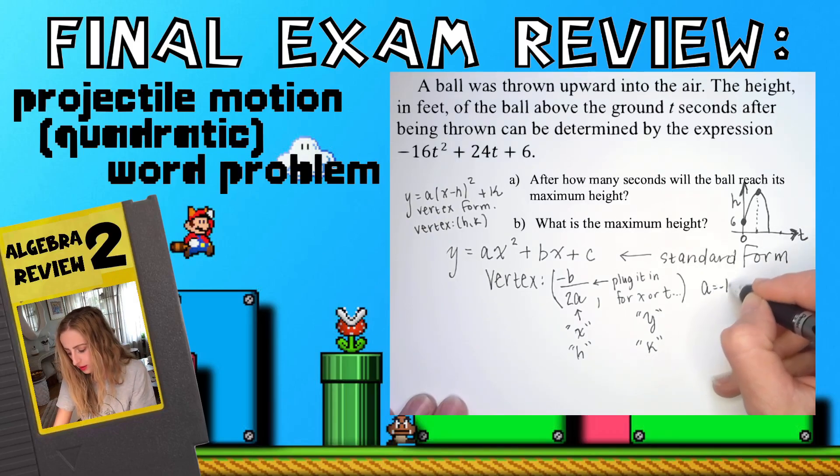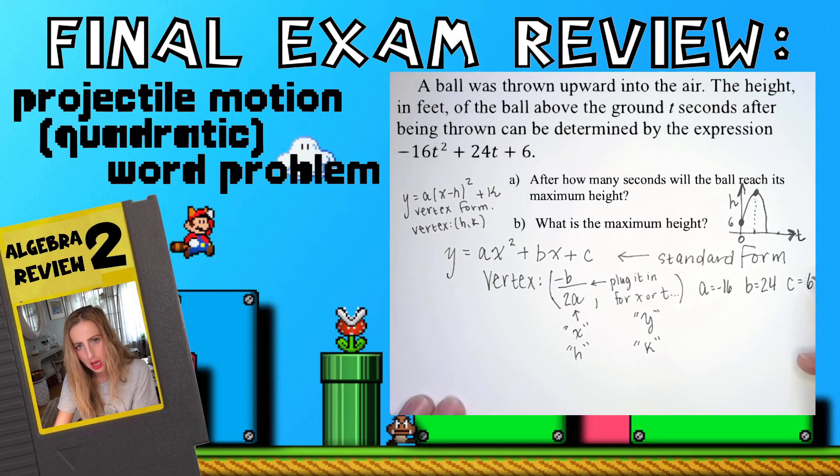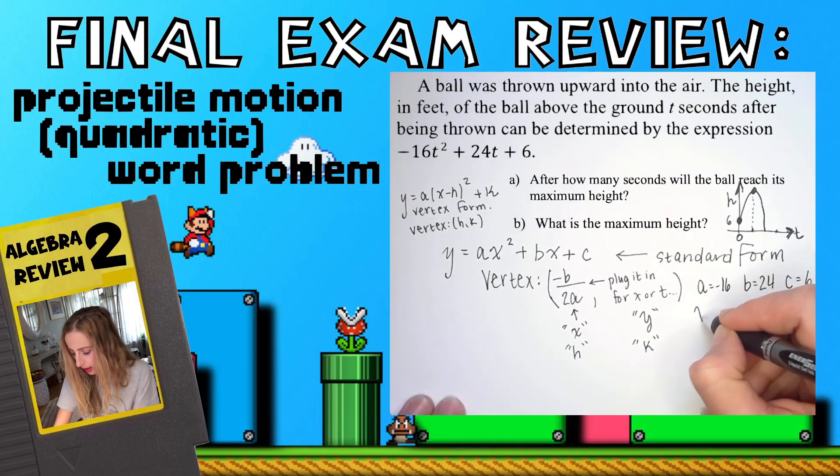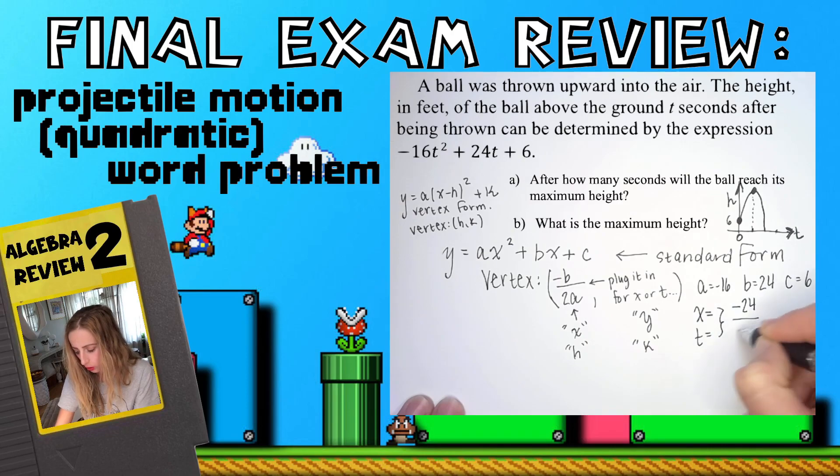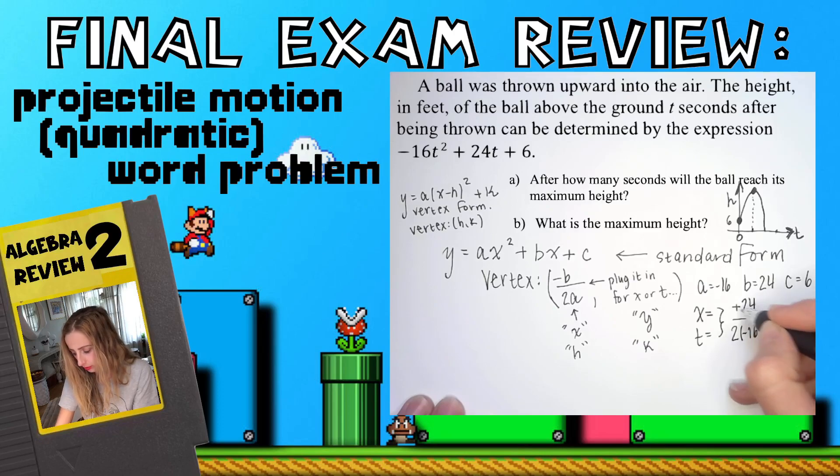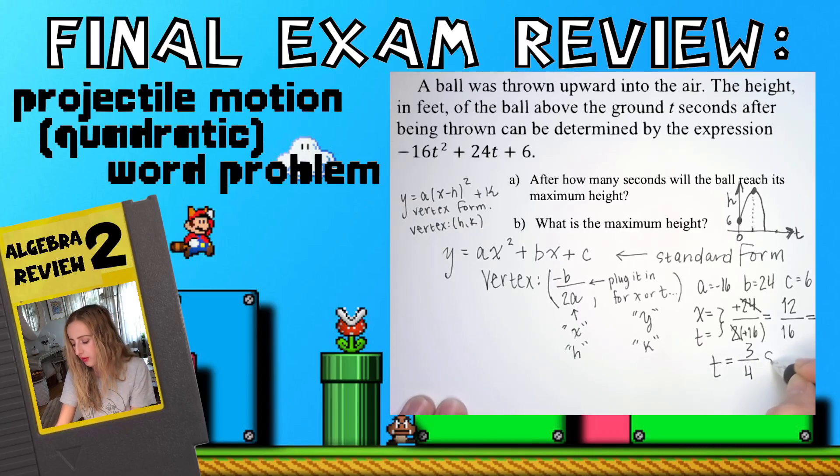a is negative 16, b is 24, c is 6. So let's go. x equals, or t in this case, negative b, so it's negative 24 over 2a, negative 16. Negative divided by a negative is positive, so we can just ignore that. I'm going to reduce 24 and 2 to get 12 over 1 times 16 is 16. 12 and 16 can both divide by 4, so we get t equals 3/4, divide by 4: 3/4 of a second.